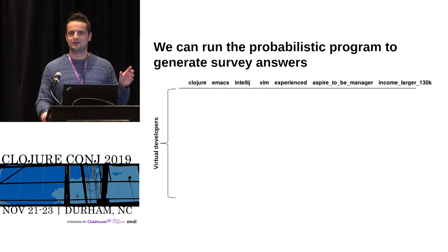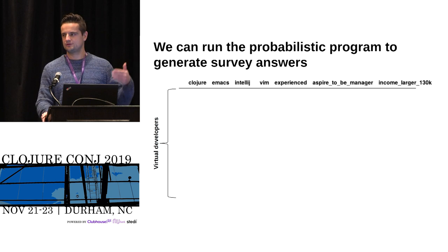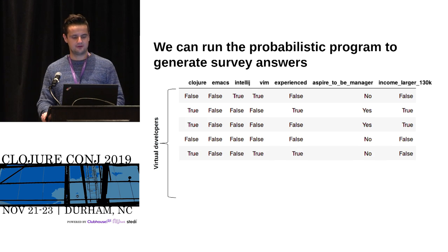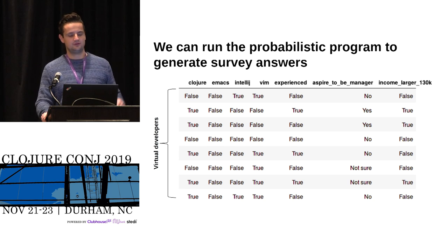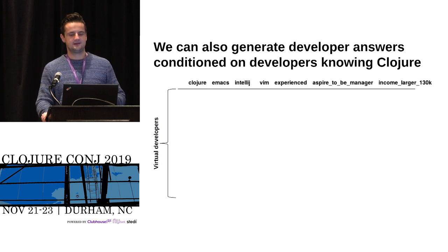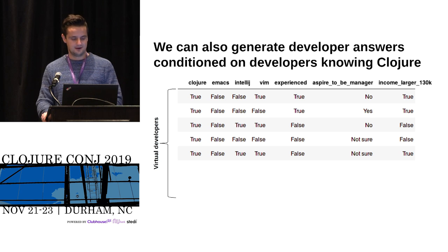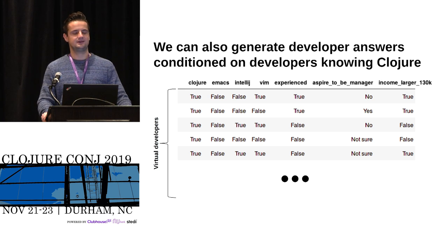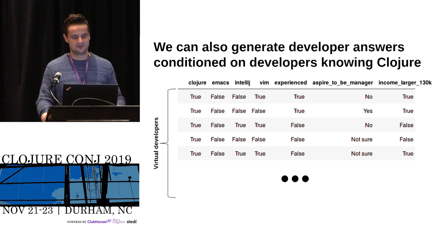Let's zoom in on what I mean when I say we can run the probabilistic program to generate survey answers. If you execute these probabilistic programs once, you get a new row in your data table — not an observed row, but something sampled from the program. You can do this many times and end up with a posterior distribution over all those dimensions: Clojure, Emacs, IntelliJ, and so on. If you ask the program to generate answers conditionally — for example, conditioning on knowing Clojure — the Clojure column is all true, and the other columns faithfully represent the values they should take given that the developer knows Clojure.